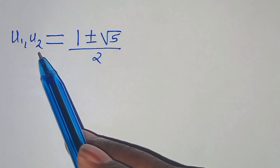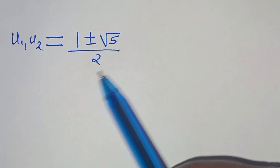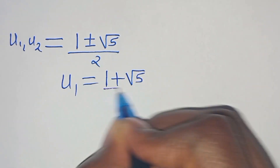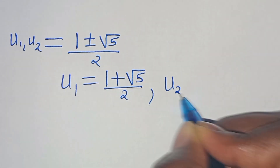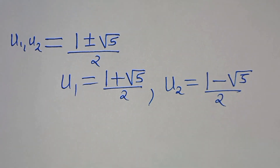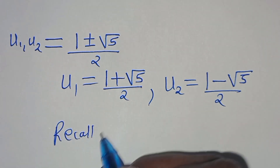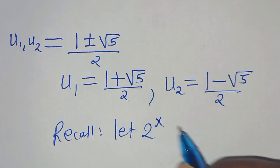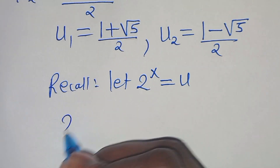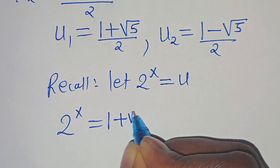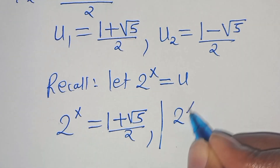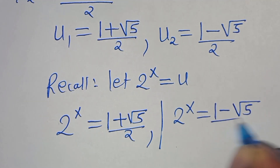So we have 1 plus or minus the square root of 5, all divided by 2. This gives us u₁ = (1 + √5) / 2 and u₂ = (1 - √5) / 2. Recalling that we let 2 to the power of x equal u, we substitute: 2^x = (1 + √5)/2 on one side, and 2^x = (1 - √5)/2 on the other.